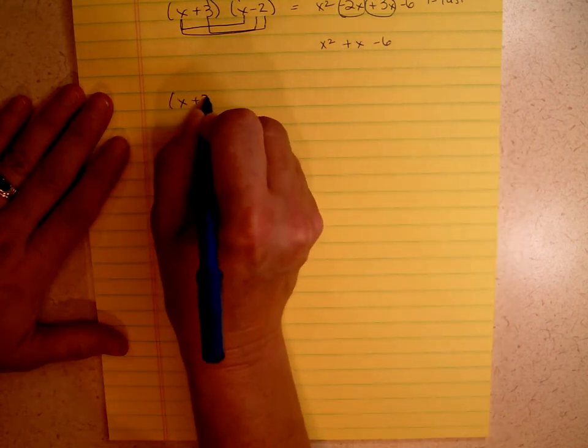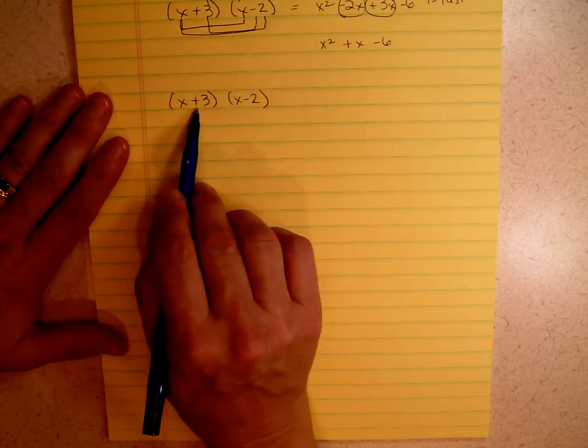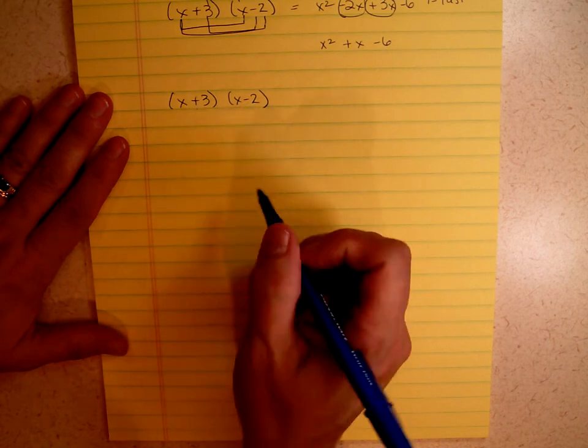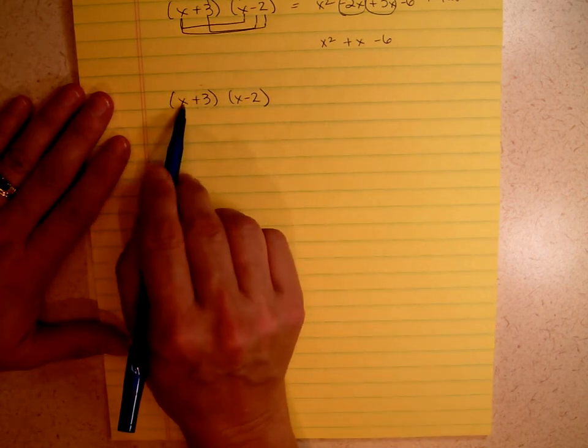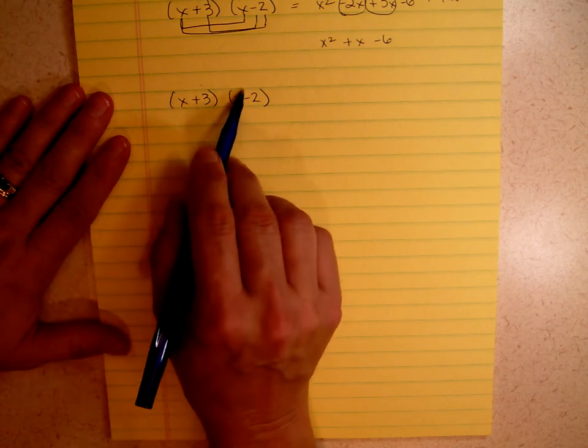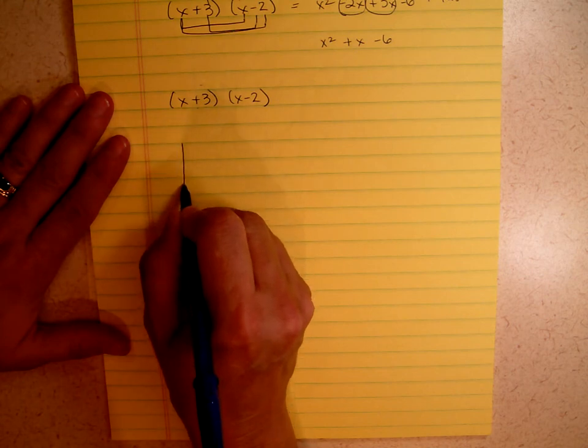We're going to use that same problem, x plus 3, x minus 2. And let me remind you that the sign stays with the number. So the plus sign stays with the 3, and the minus sign stays with the 2. Because this parenthesis has two elements, x and positive 3, and this has two elements, x and negative 2, we're going to set this up as a 2 by 2 matrix.